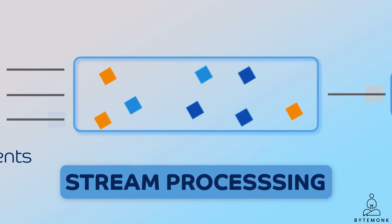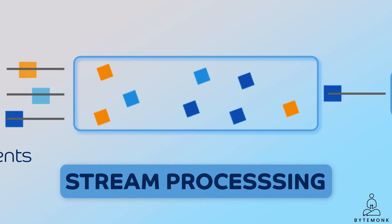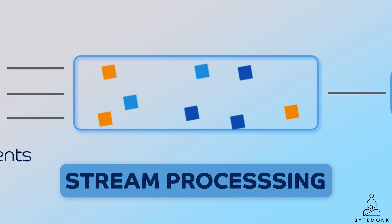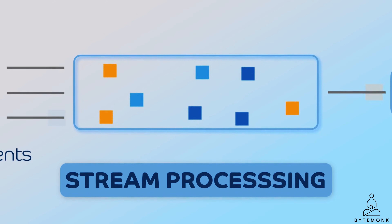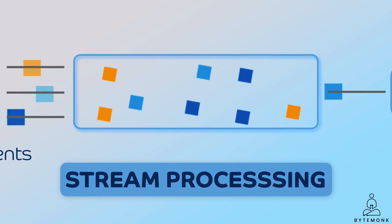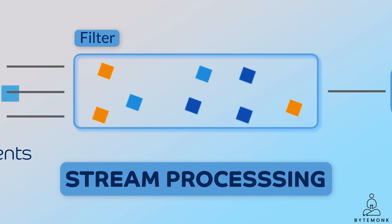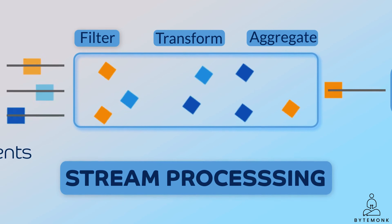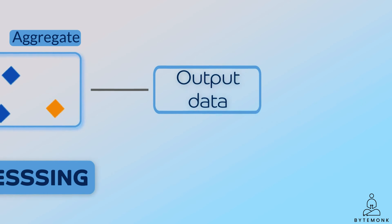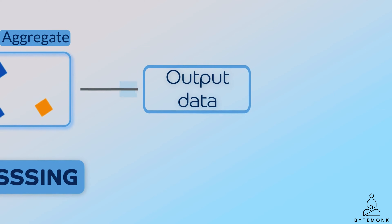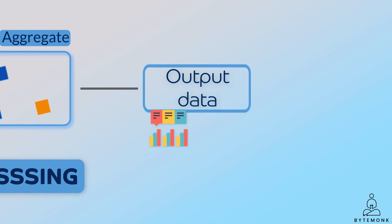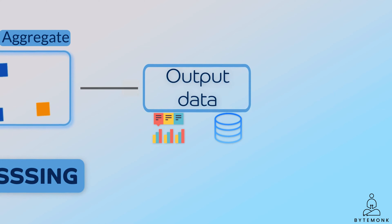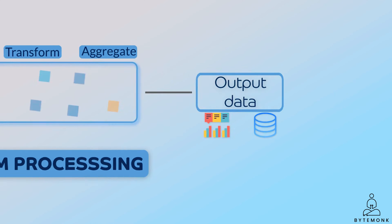Once the data has been ingested, the stream processor processes it according to a set of rules. These rules can be used to filter, transform, and aggregate the data. The stream processor then outputs the processed data to a variety of destinations such as dashboards, databases, and other applications.